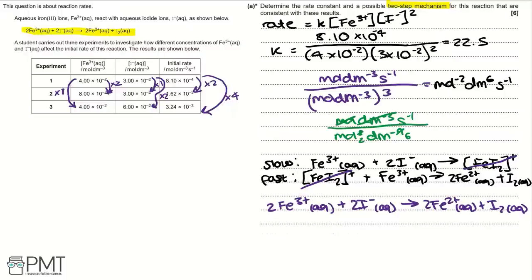To get the 6 marks, you need a comprehensive conclusion using quantitative results to determine reaction orders, determine k from the correct rate equation, and propose a valid two-step mechanism consistent with the results.